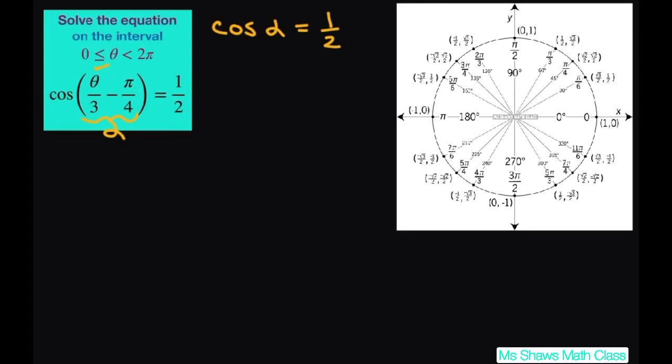So if you look on the unit circle, remember cosine is your x over r. r is 1 because we have the unit circle. So we're just looking for when x is 1 half, that's in quadrant 1 and quadrant 4. x is 1 half here and x is 1 half here.